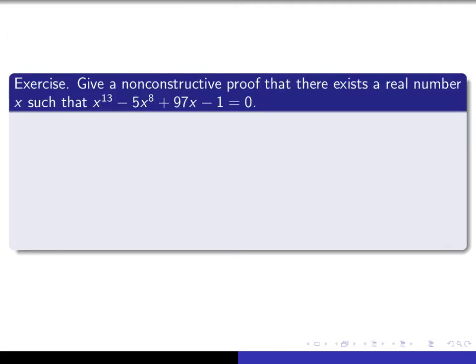So in this exercise, this is the one that we saw in a previous video. I want to give a non-constructive proof that there exists a real number x such that x¹³ - 5x⁸ + 97x - 1 = 0. And I want you to do it using the fundamental theorem of algebra.